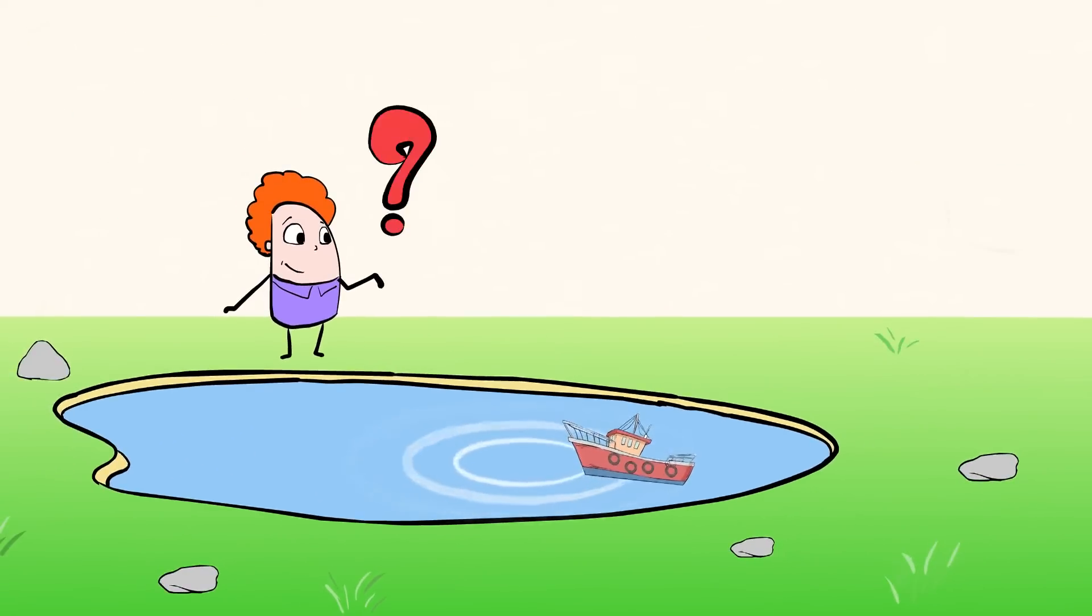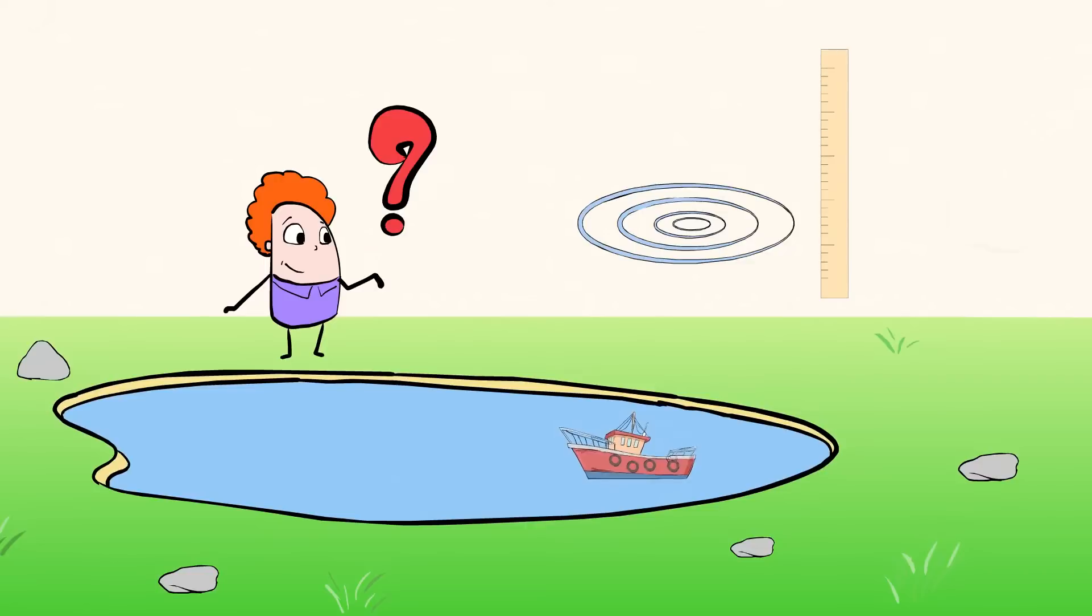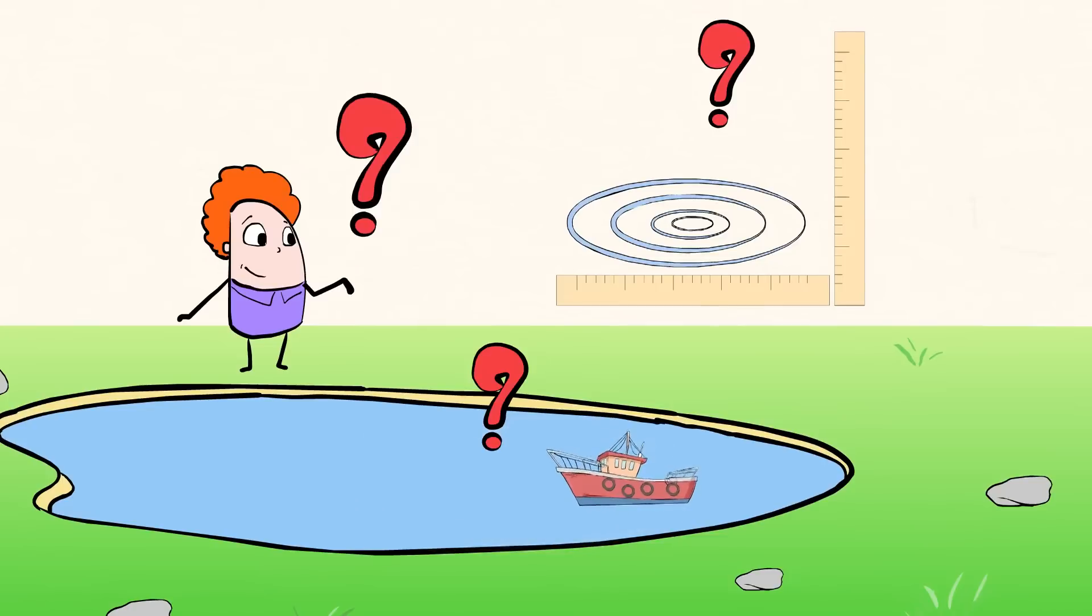What can we observe from these waves? Are they all the same height and length? What happens as the ripples spread out and they get farther apart until there are no more waves to be seen?